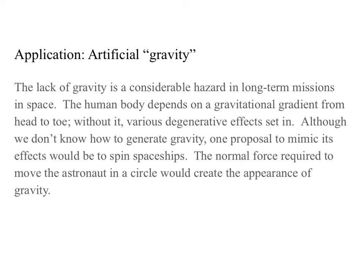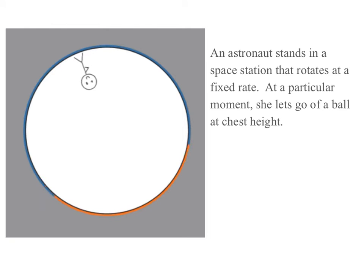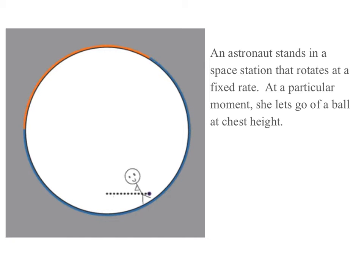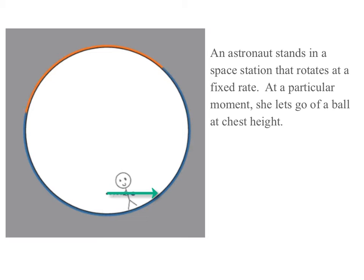The normal force required to move the astronaut in a circle would create the appearance of gravity. So we have an astronaut standing in a space station that rotates at a fixed rate. At a particular moment, she lets go of the ball at chest height. Once she lets go of the ball, there are no forces on it, so it continues at the velocity it had while going around the space station, which we can remember as V equals omega R.